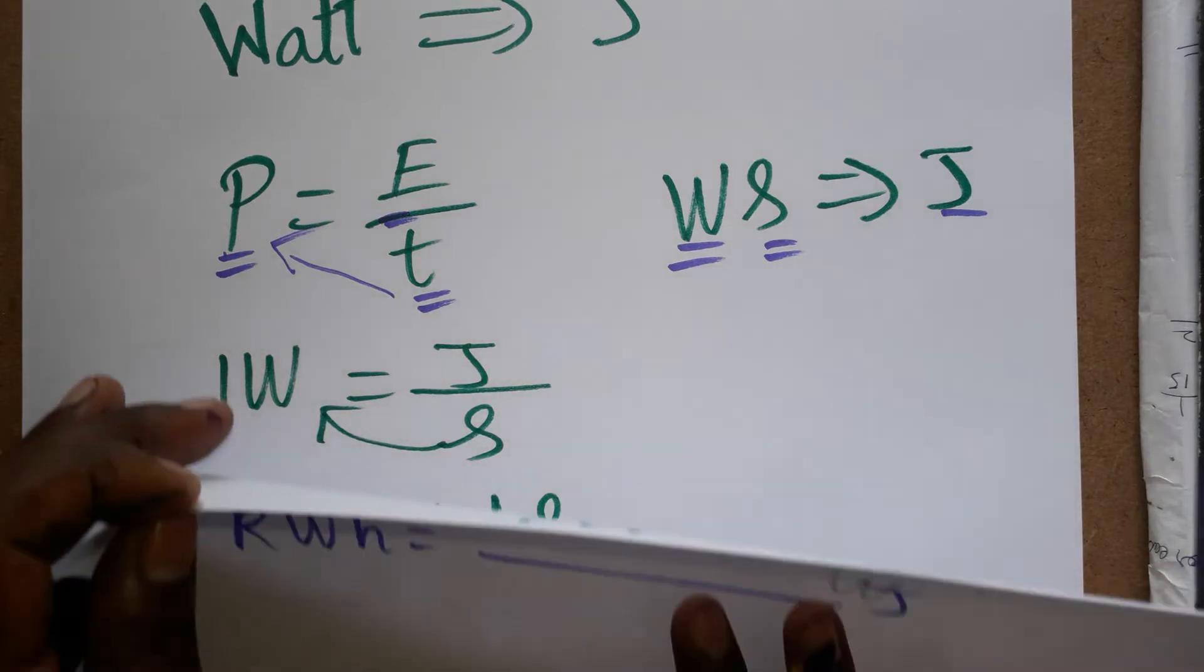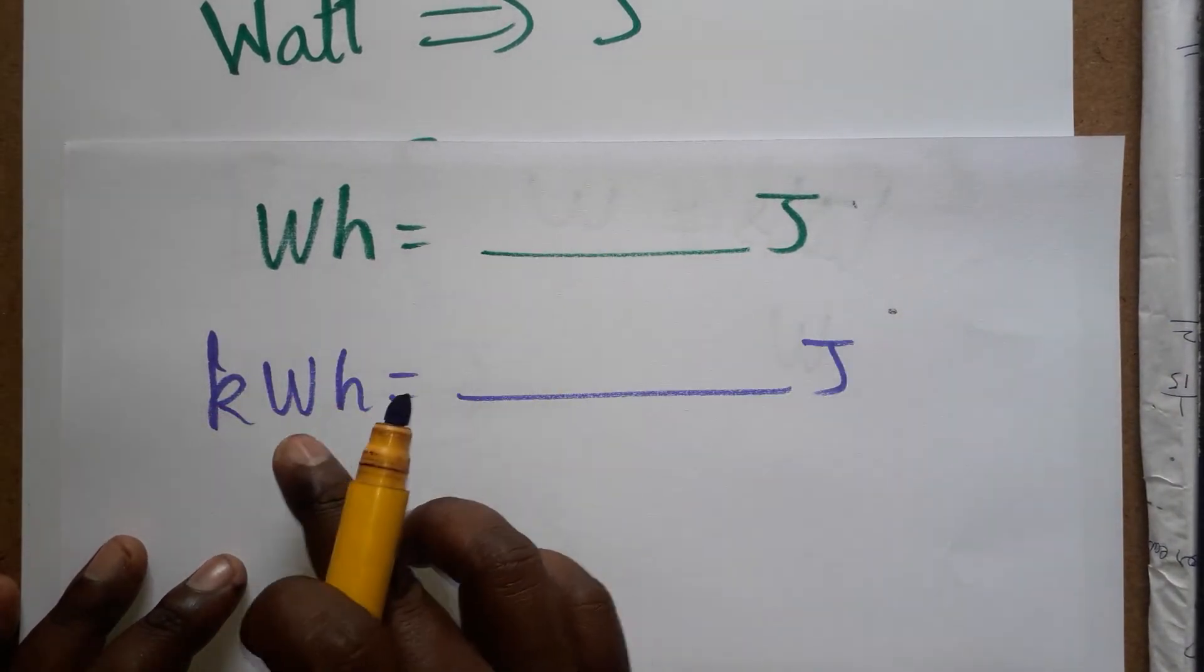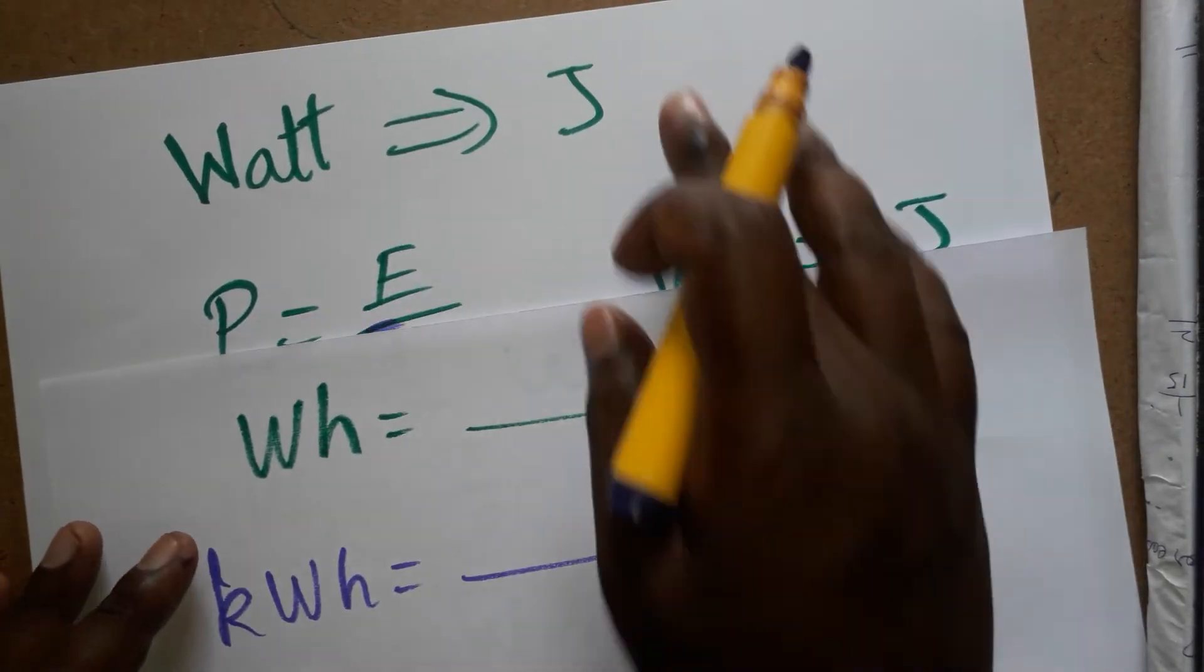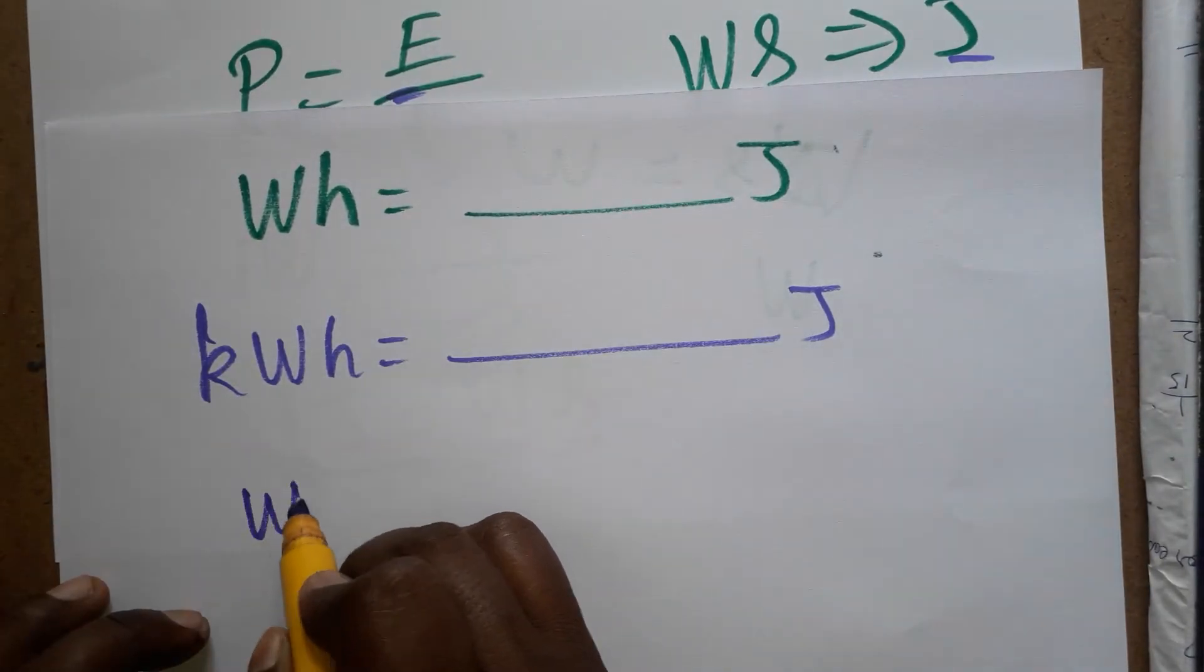Now I have another unit to convert. So watt hour is equal to dash joule, kilowatt hour is equal to dash joule. We have to convert watt hour to watt second, then only easily we can convert to joules.